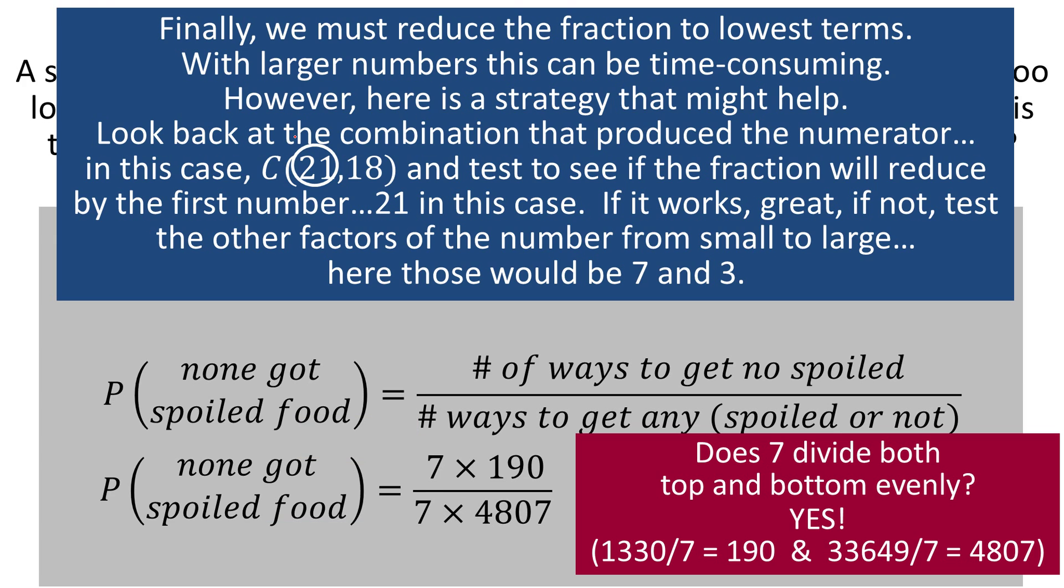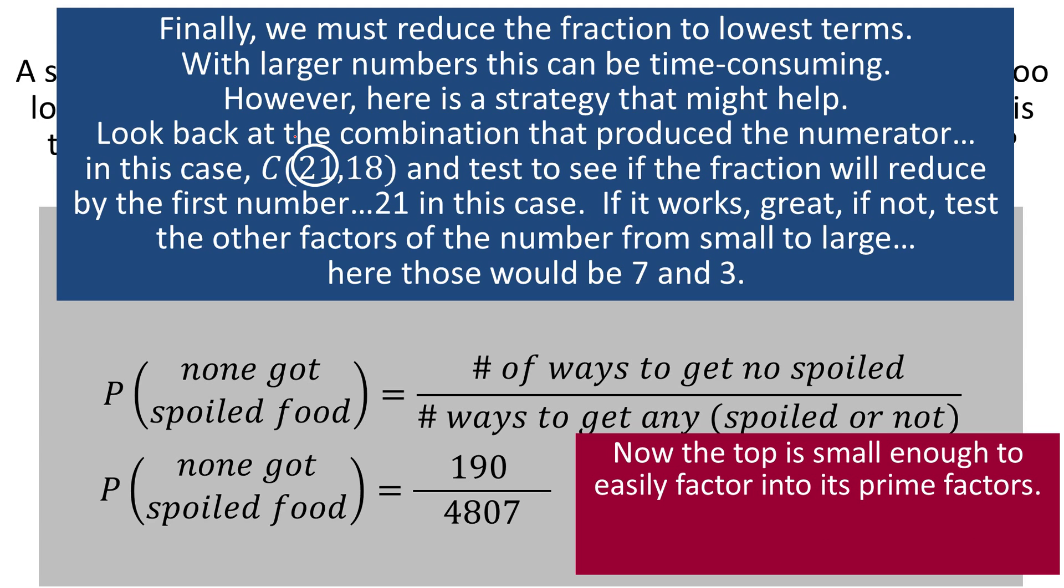That means I can divide the 7s out. So now I've reduced the fraction down to 190 over 4807. I have to keep trying though, but I know that the numbers are reasonably small now, especially the numerator. I can factor 190. I know that's 19 times 10 and 10 then factors into 5 times 2, so I can get the prime factorization of the numerator very easily. It's just 19 times 5 times 2.